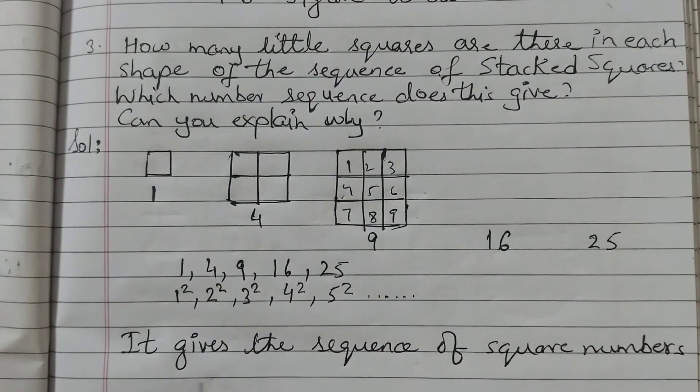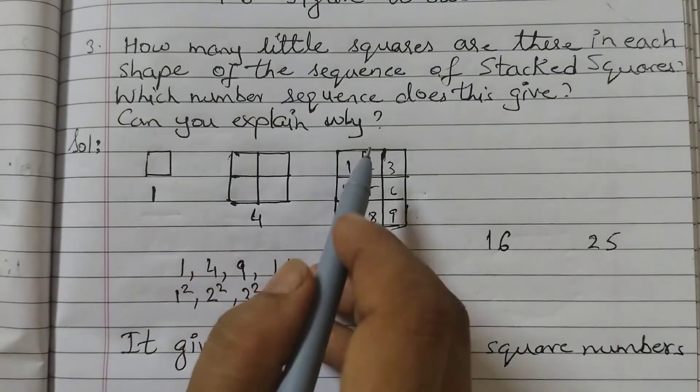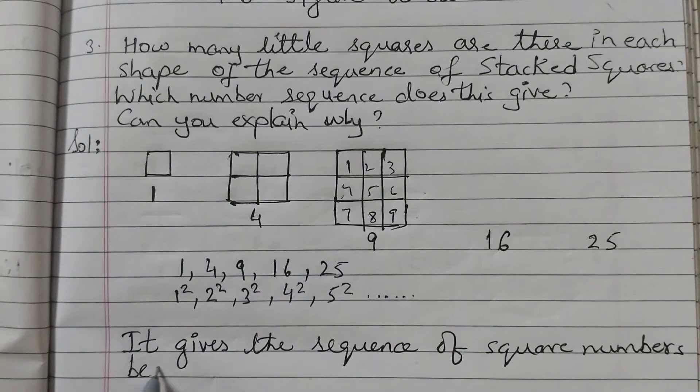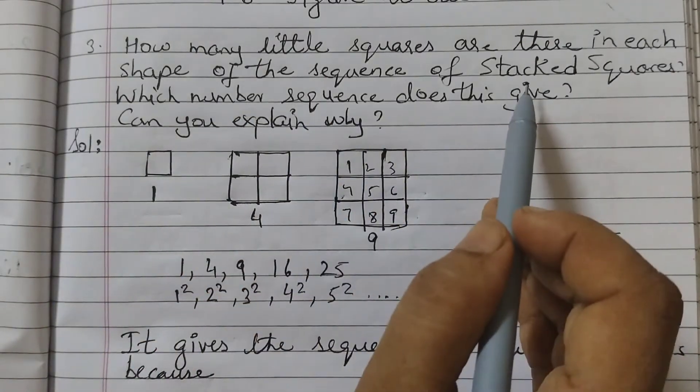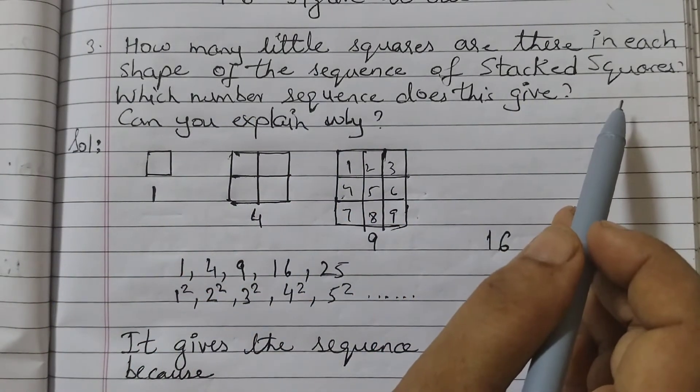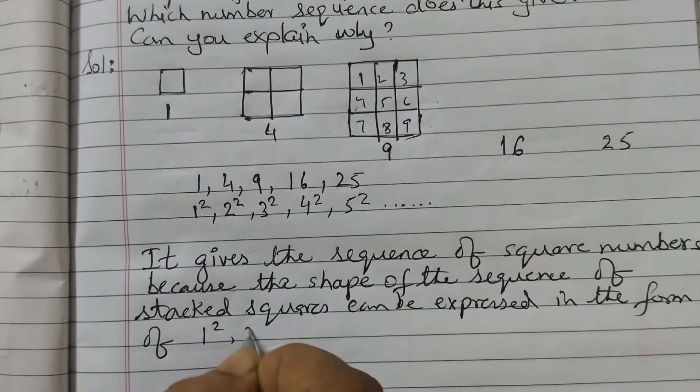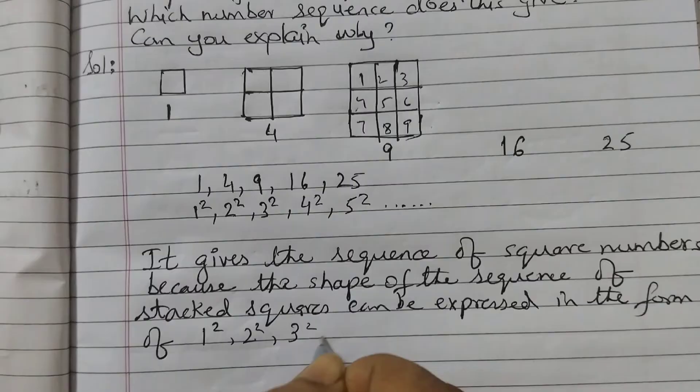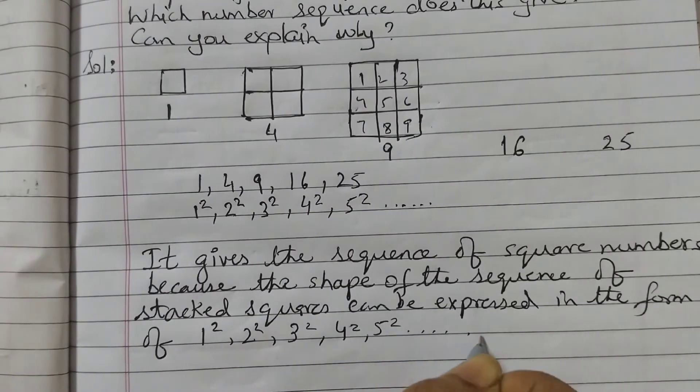So we will write: It gives the sequence of square numbers. Can you explain why? Yes. Because the shape of the sequence of stacked squares can be expressed in the form of 1 squared, 2 squared, 3 squared, 4 squared, 5 squared and so on.